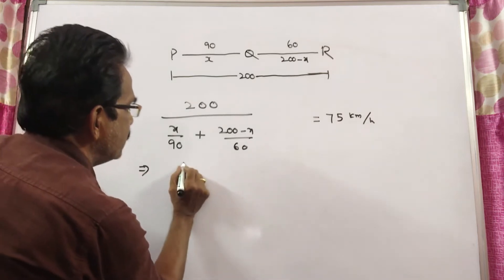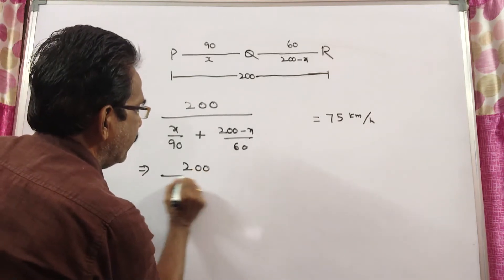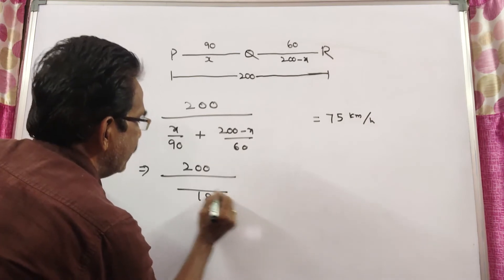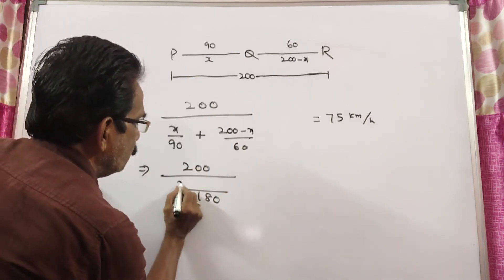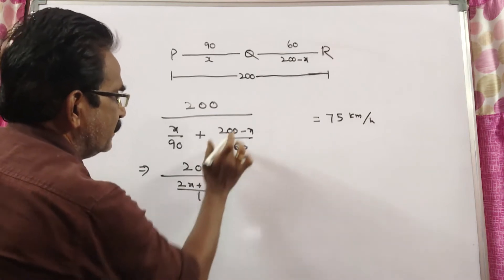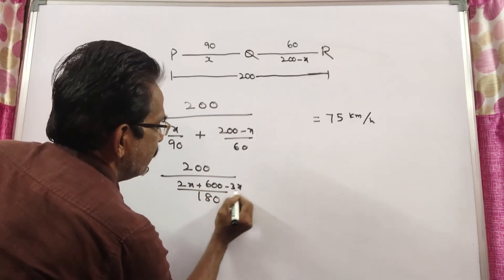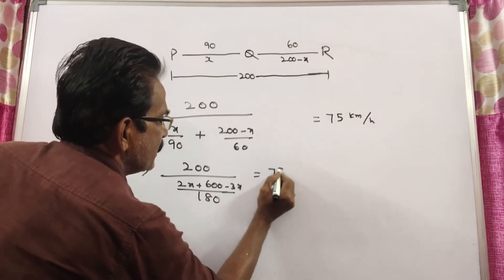This implies 200 divided by the LCM 180. We get 2x plus 3 into 200, which gives 600 minus x, is equal to 75.